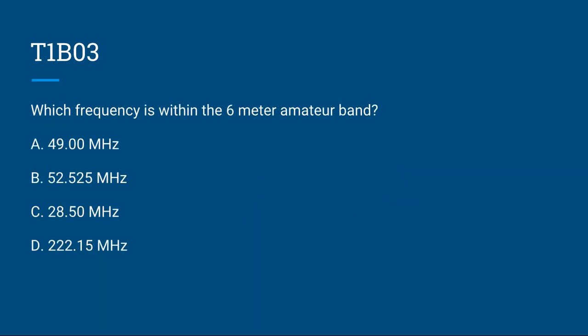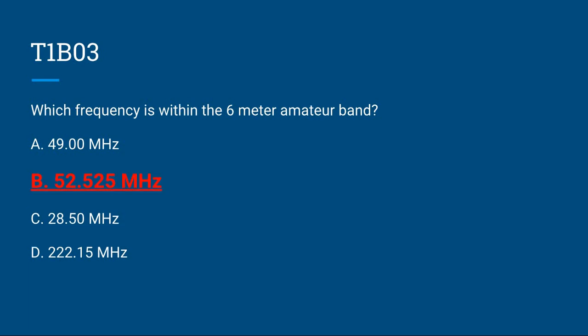T1B03: Which frequency is within the 6 meter amateur band? A, 49.00 MHz; B, 52.525 MHz; C, 28.50 MHz; or D, 222.15 MHz. The correct answer is B, 52.525 MHz.